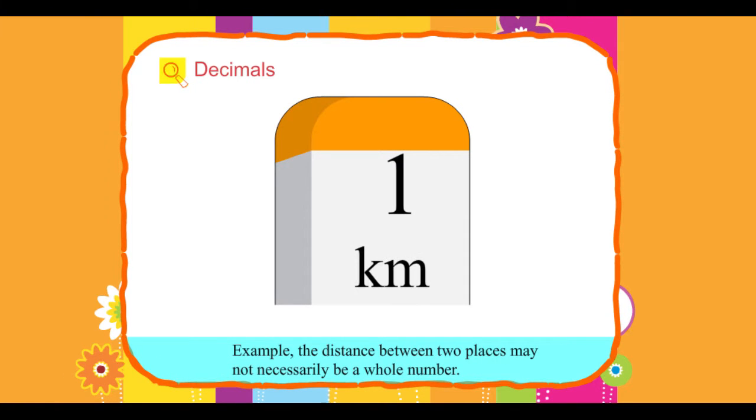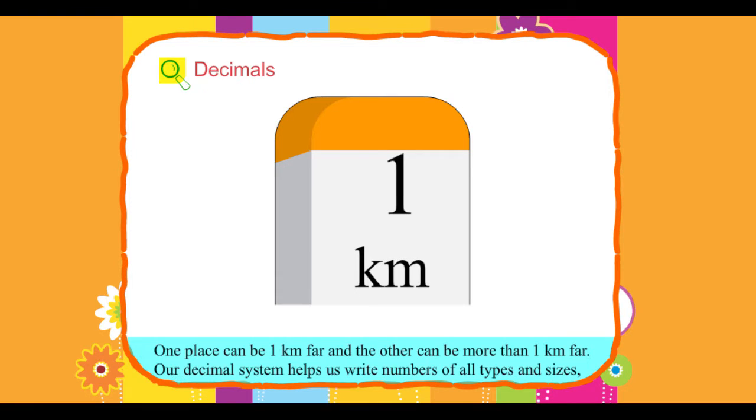Example: The distance between two places may not necessarily be a whole number. One place can be 1 kilometer far and the other can be more than 1 kilometer far.